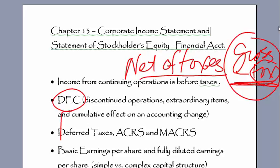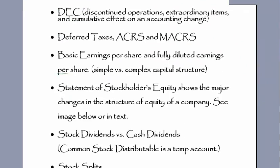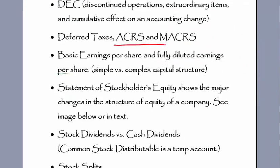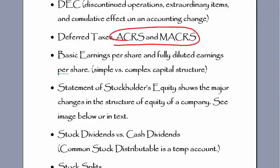The next item is deferred taxes. Probably the easiest thing to do is to talk about ACRS and MACRS first. Prior to 1980, everything was done on the double declining or straight-line method for calculating depreciation. Part of Reaganomics was to get people back to work.